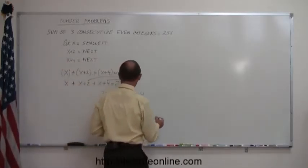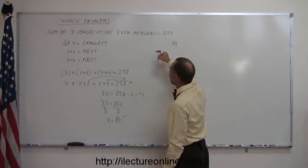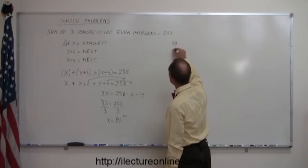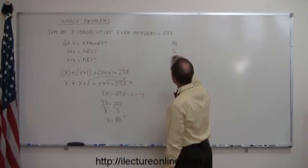So that means the three numbers are the smallest, that's equal to 84, the next is 84 plus 2, which is 86, and the next is 84 plus 4, which is 88.